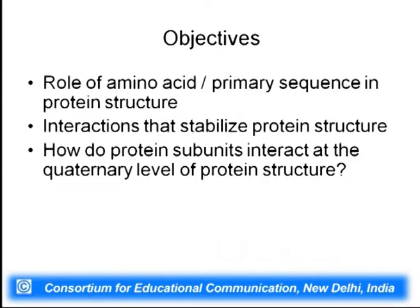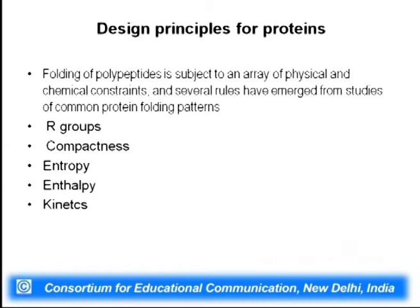In this section we are going to talk about the interactions that stabilize the tertiary structure. The objectives of this lecture are: what is the role of amino acids and the primary sequence in the tertiary protein structure; what are the key interactions that stabilize protein structures; and how do protein subunits interact at the quaternary level of protein structure. There are some propensities for structures and certain principles on which a tertiary structure will be formed.